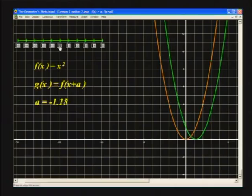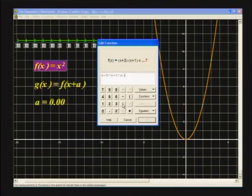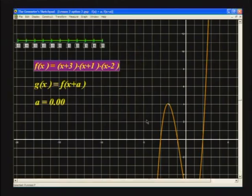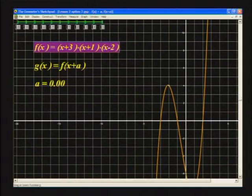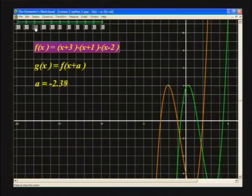The power of this program is that we can change the function from F of X equals X squared to any other function. I've reset A to zero and changed the function to X plus three multiplied by X plus one multiplied by X minus two and the OK button. Again, a graph of a cubic function. So if you select A equals minus three, then the graph should move right by three units. Cool. It's done exactly what we wanted.